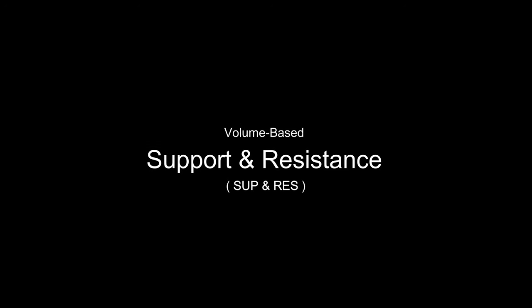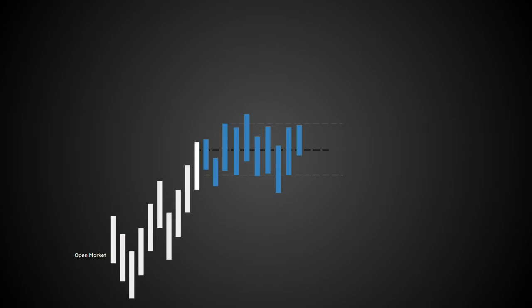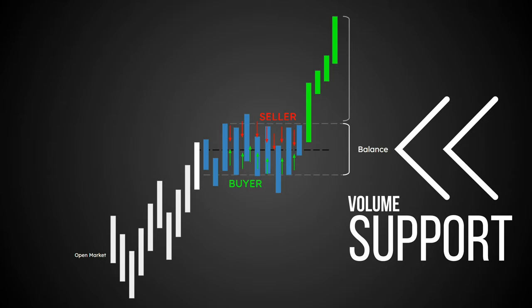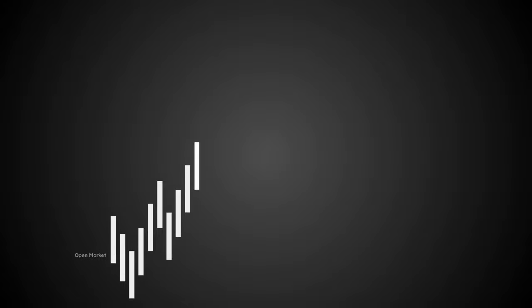Volume-based support and resistance (SUP and RES) — the area of balance — can be: 1. Support: as a result of volume pressure, buyers have taken control of the price and pushed the price out of the balance area. A rise in price is observed — the bulls have defeated the bears. 2. Resistance: as a result of volume pressure, sellers have maintained price control and pushed the price out of the balance area. A fall in price has been observed — the bears have won this battle.